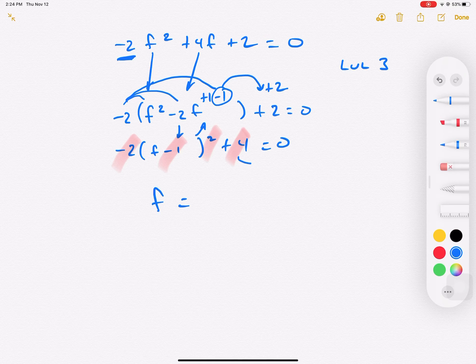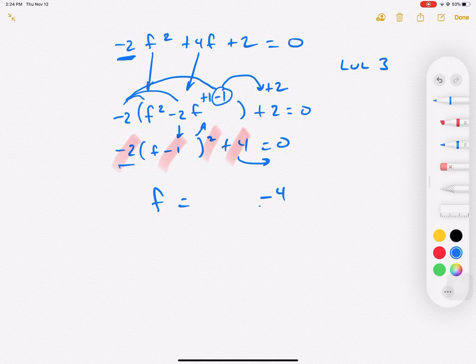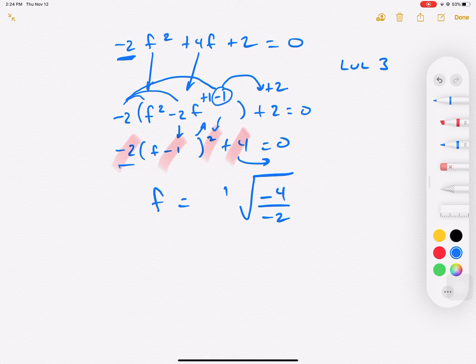So we're going to say f is equal to - we move the negative 4 over, so that's going to be negative 4 divided by negative 2. Then take the square root of that, plus and minus, and then add the 1.